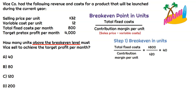For step one, to calculate the break-even point in units, our formula is simple — it's just total fixed costs divided by contribution margin per unit. The contribution margin per unit for this product: if the selling price is $32 and the variable costs are $12, that means our contribution margin per unit is $20. So if we take total fixed costs of $800 divided by $20 per unit, that means they need to sell 40 units to break even and cover those fixed costs.